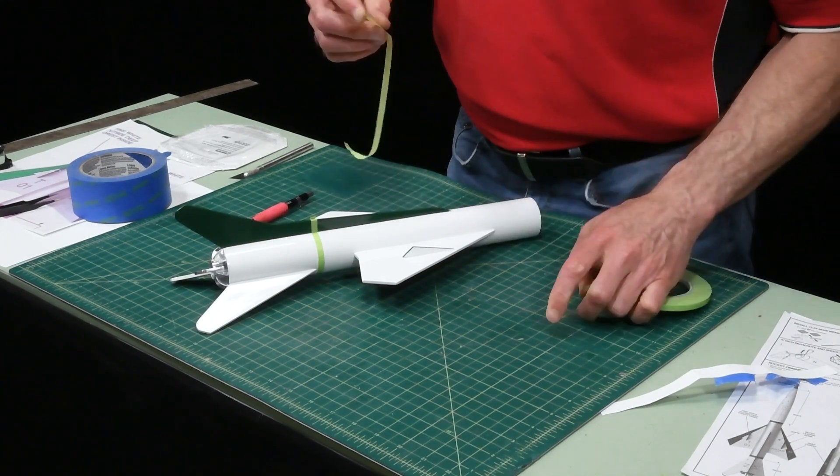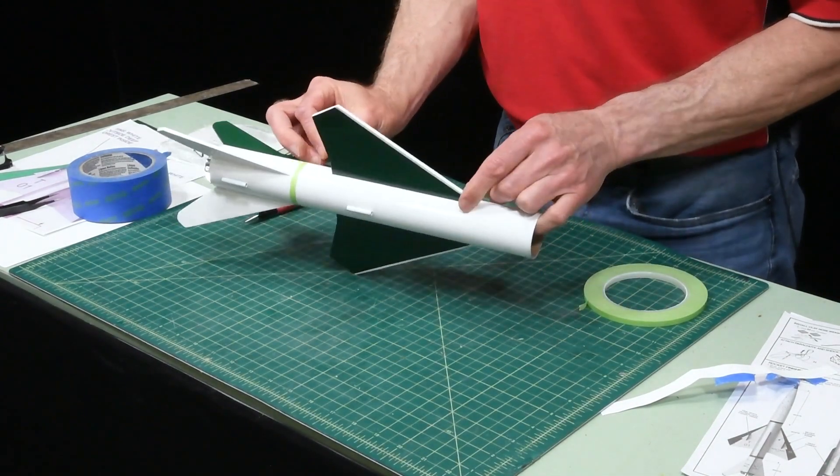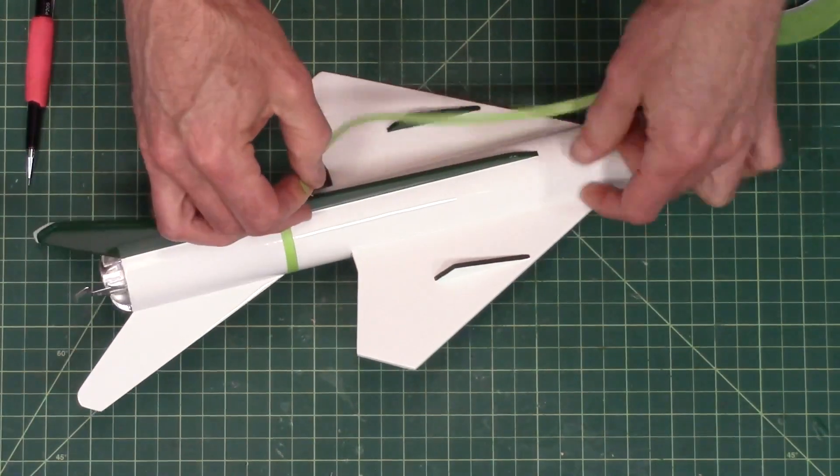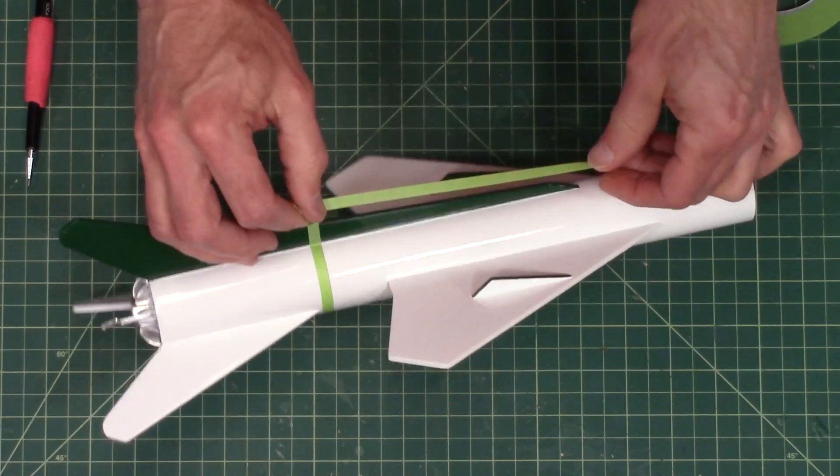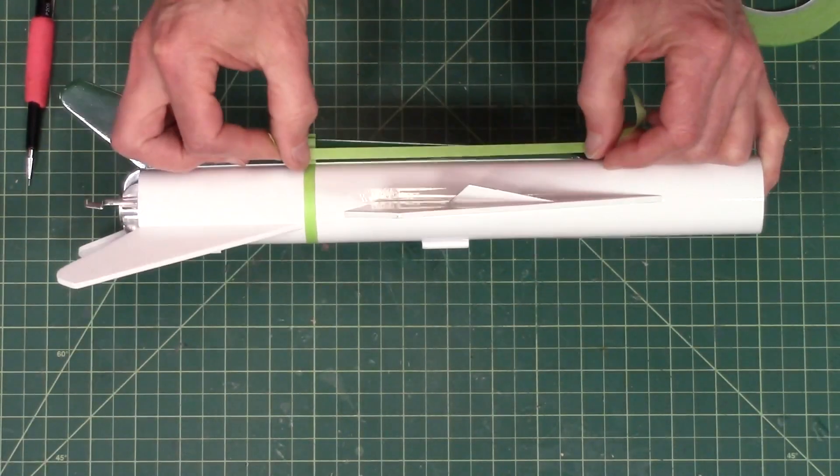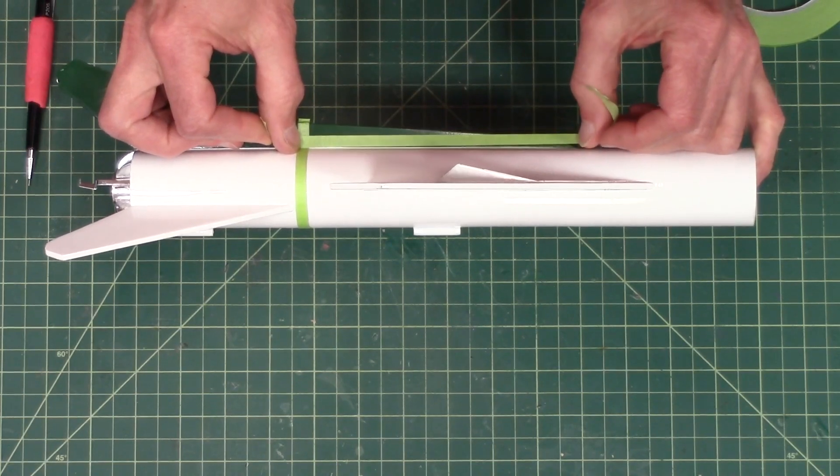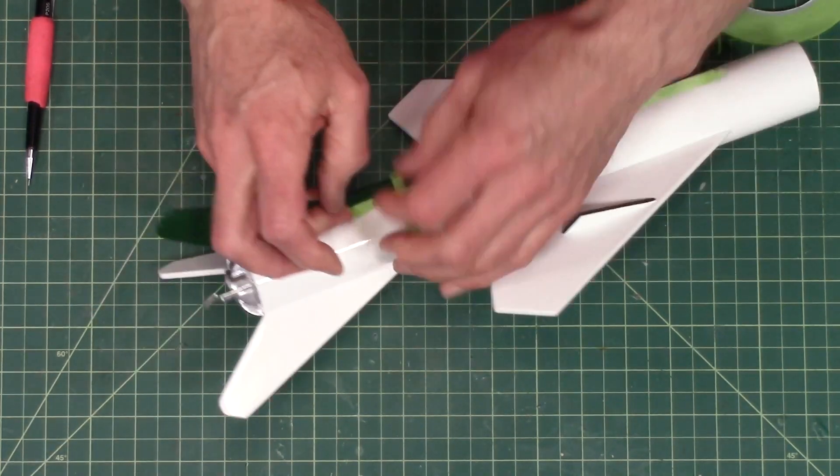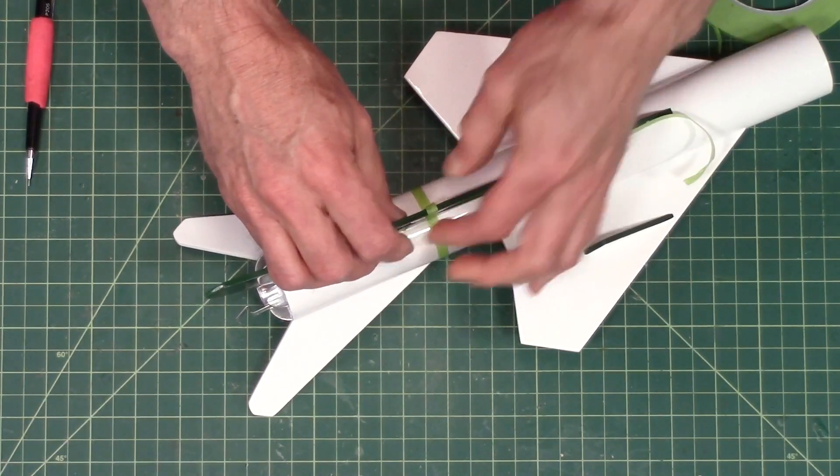And then I'm going to start masking off everything else. Just use your paint lines as the guide. So right now I'm going to do along the green because this has to be masked off. I'm going to fold it over so I can peel it up.